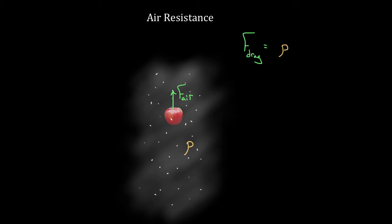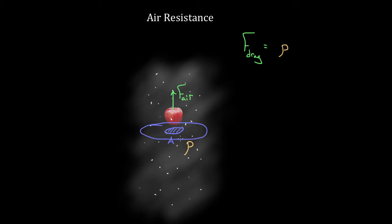What's something else that this drag force is going to depend on? The cross-sectional area of this apple moving through the air. Imagine the tube of air that this apple's moving out of the way as it falls down. That cross-sectional area is what's pushing the air out of the way. If that area gets bigger, it's going to be pushing more of the fluid out of the way — more collisions per second as this apple's falling. In other words, think of a parachute. You want your parachute to be really big because you want a lot of drag force when you're falling through the air. If your parachute was only this big, you'd be in trouble.